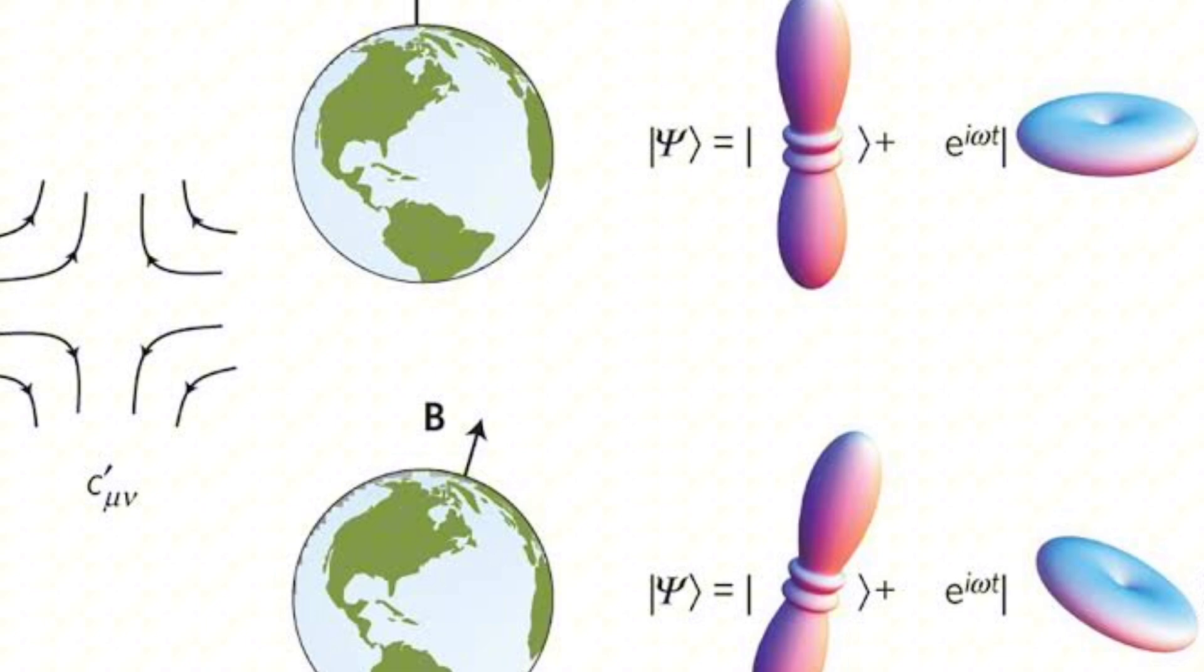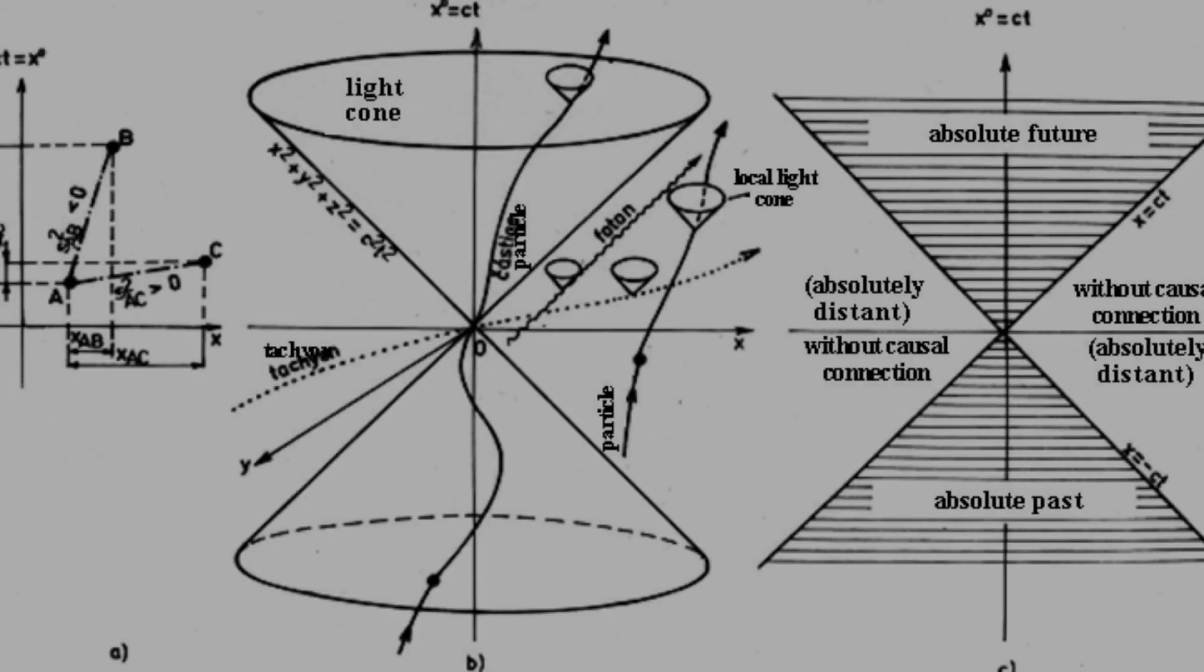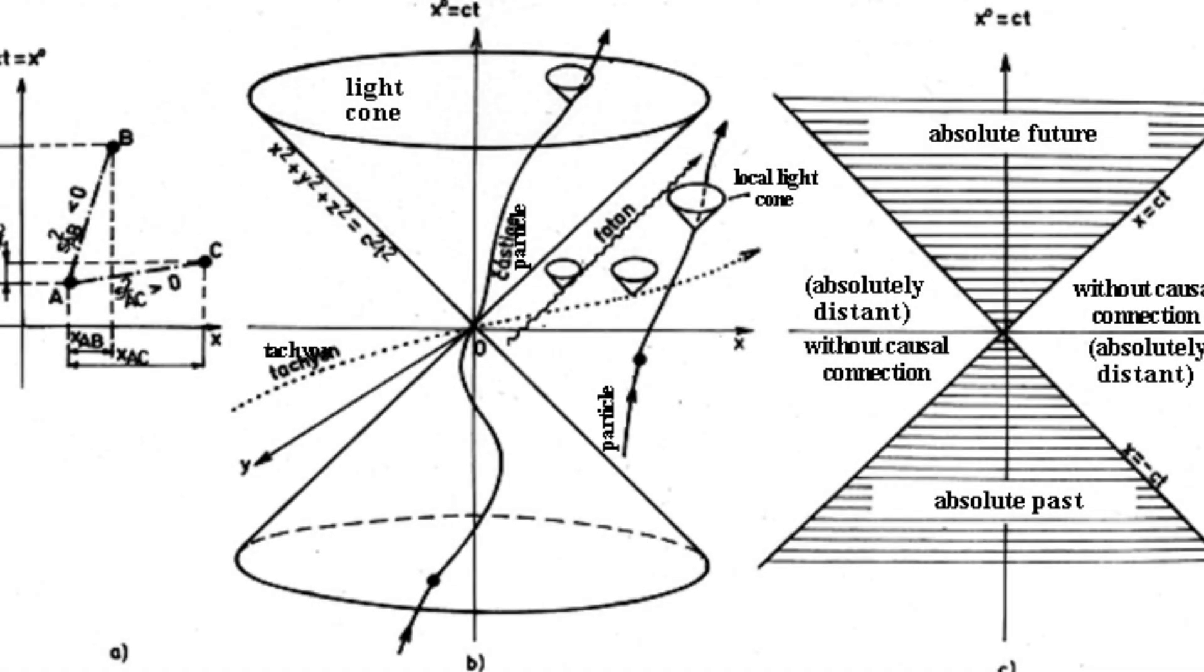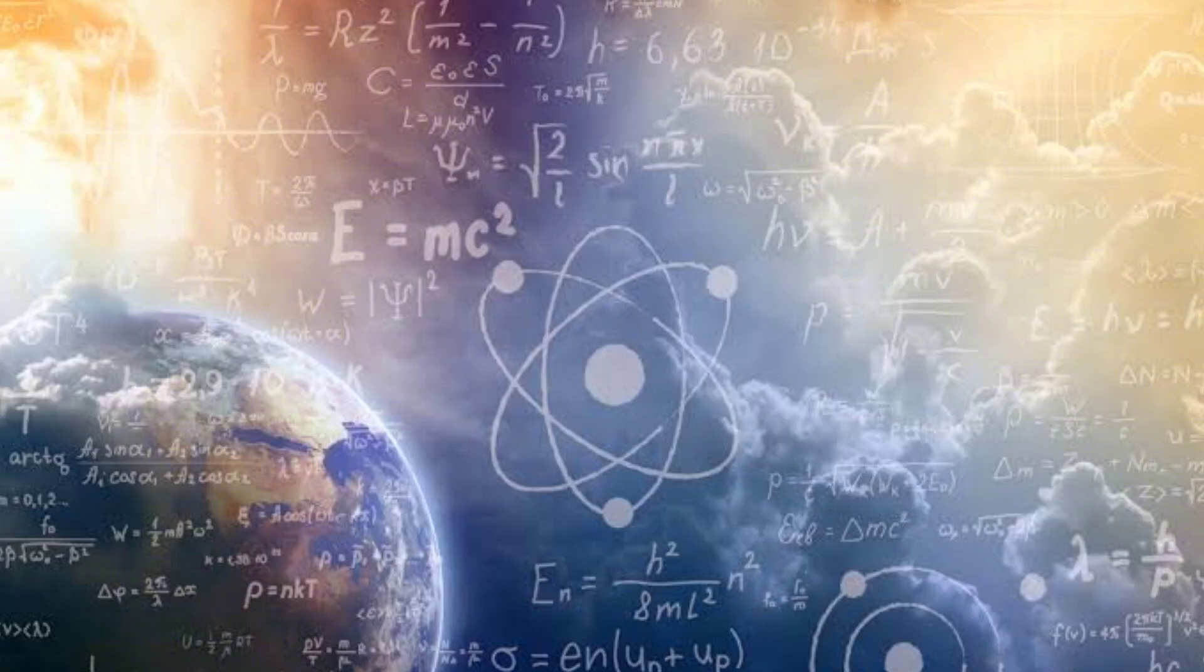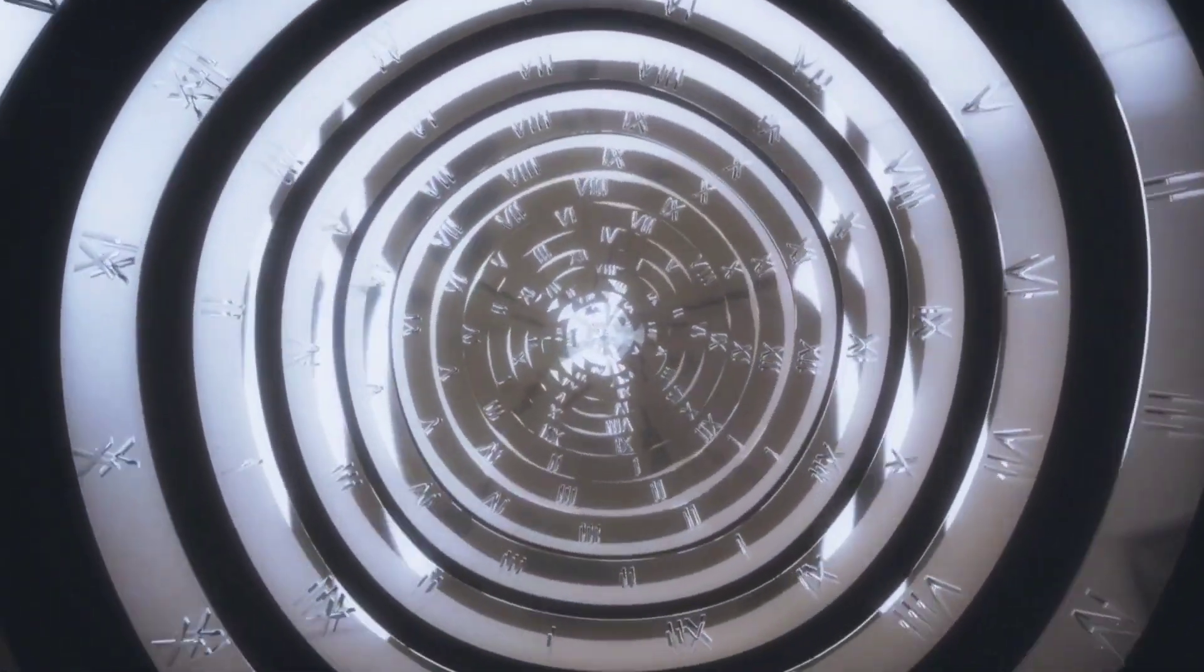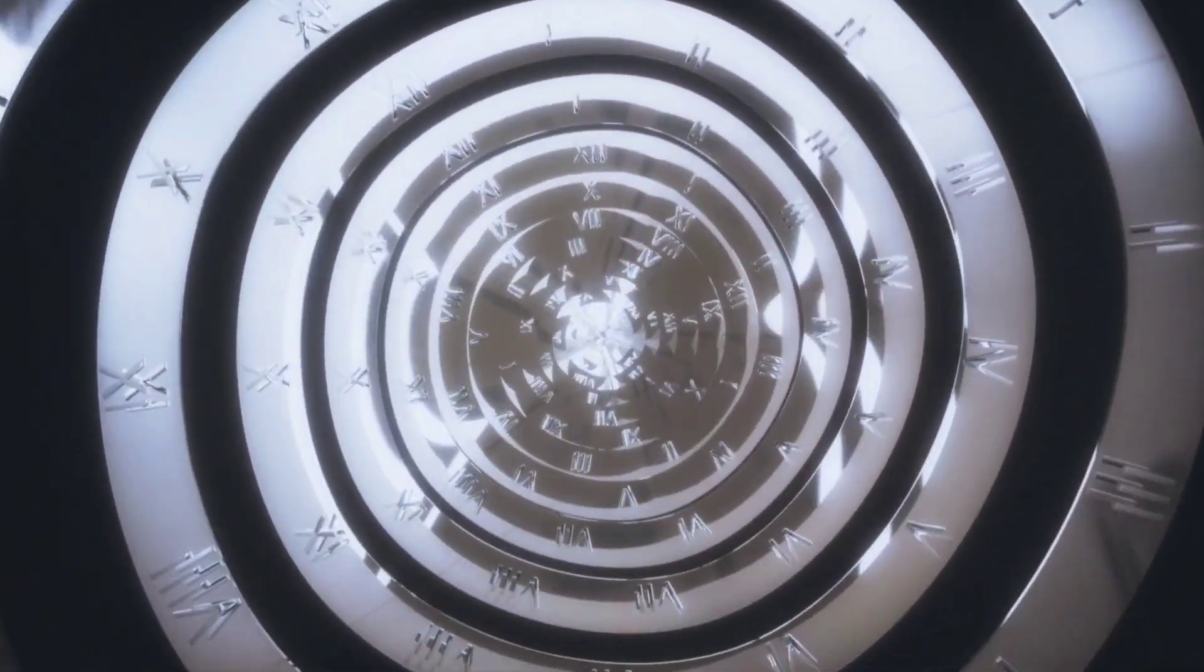Lorentz symmetry is foundational to Einstein's theory. It suggests that there is no preferred direction in space-time, no special spot where the laws of physics behave differently. Over the years, this idea has been put to the test again and again. With relativity passing every challenge, until now, could we finally find an exception?